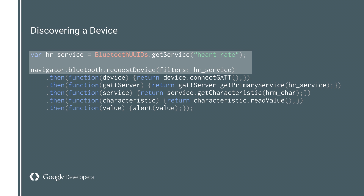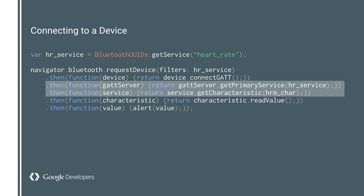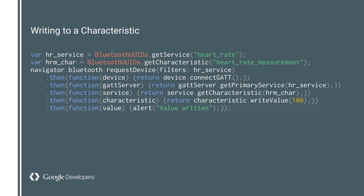It's pretty simple. The developer will request access to a device filtered by service — in this case, heart rate. The system will then ask the user to confirm that they want the web app to pair with the device. Once the user has granted access, the developer will then be able to get direct access to the service on the device, which means you can get access to the service's characteristics — which in this case would let you read the heart rate from the device. And it's a very similar process for writing data to a Bluetooth device: you get access to the device, to the service, and the characteristic, and then you call write value. It's really that simple.